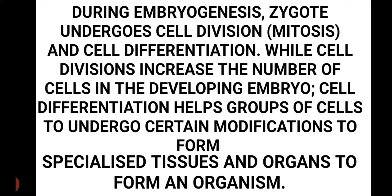During embryogenesis, the zygote undergoes cell division and cell differentiation — these are the two major events. Cell division, which is always mitosis, increases the number of cells in the developing embryo. Cell differentiation causes groups of cells to undergo certain modifications to form specialized tissues and organs, ultimately forming the organism.